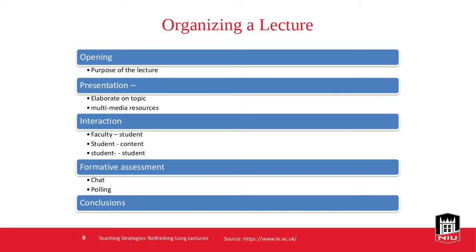Student-to-student interaction could include breakout rooms for synchronous sessions, or discussion boards for asynchronous ones. There's also a formative assessment component — any type of assessment done during the course, like polling or chat, to assess student learning in the moment. Finally, there's a conclusion. This model breaks the lecture into pieces to incorporate students and keep them actively engaged.